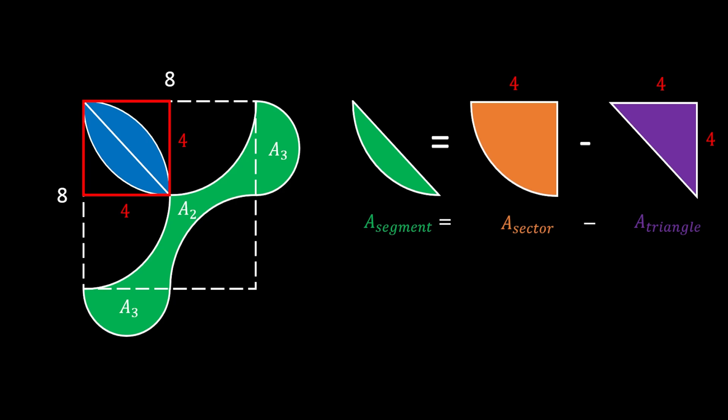Let's first find the area of the circular sector. It is equal to one quarter of the full circle, so that is 1/4 times r² times π. In our case, that is 1/4 times 4² times π, and that is equal to 4π.